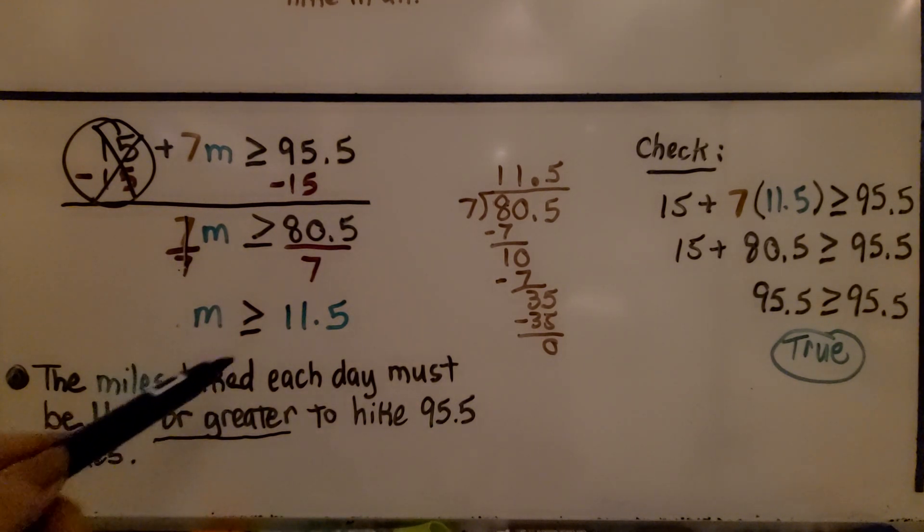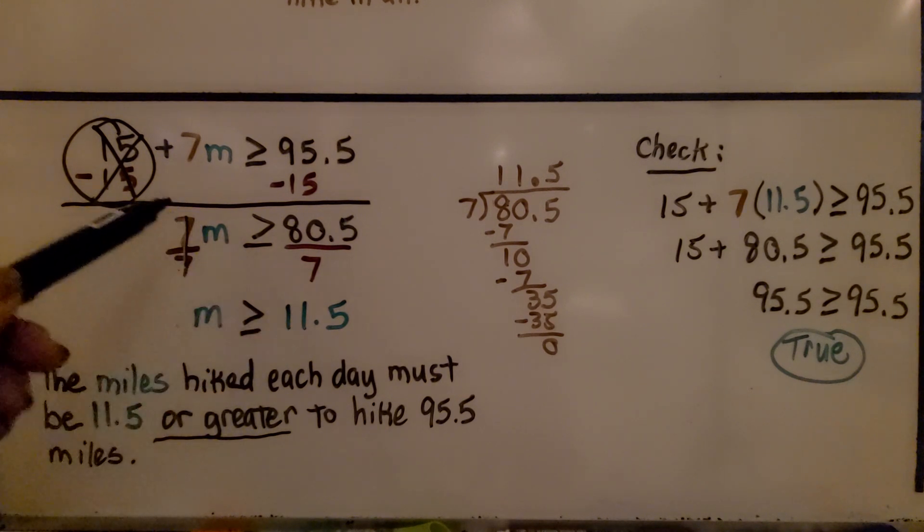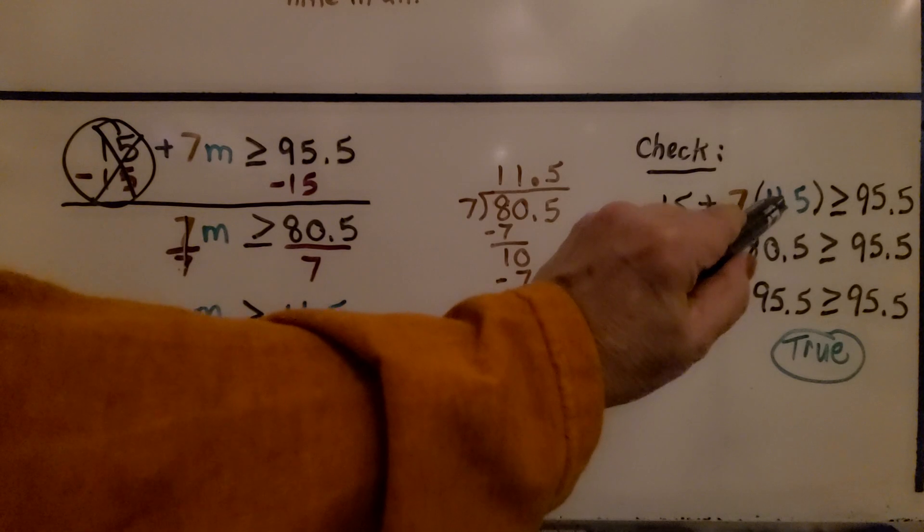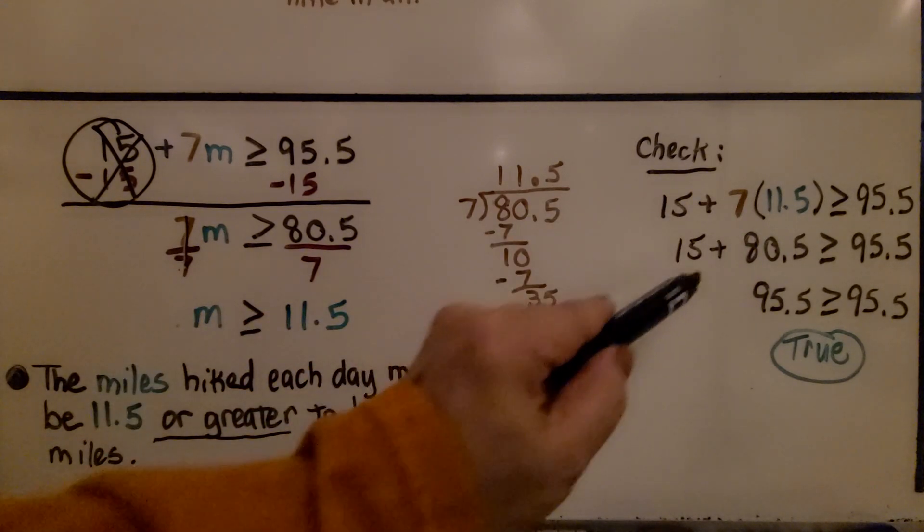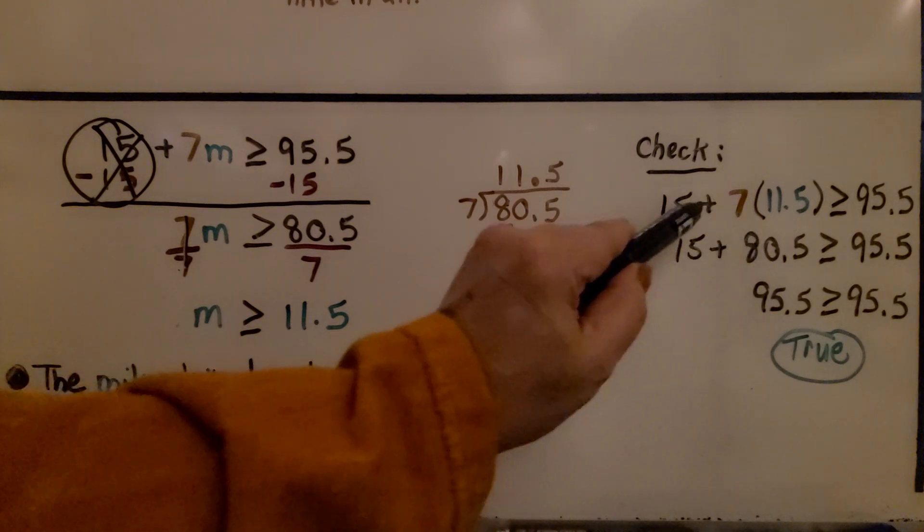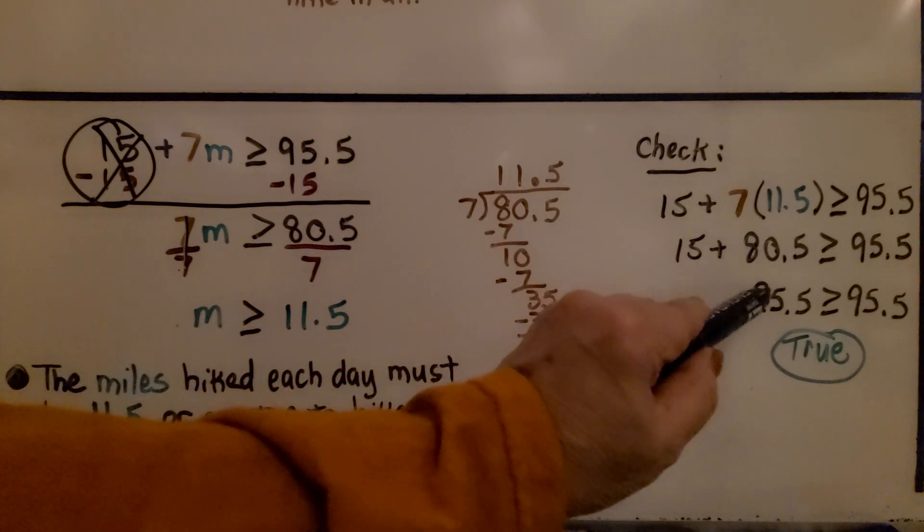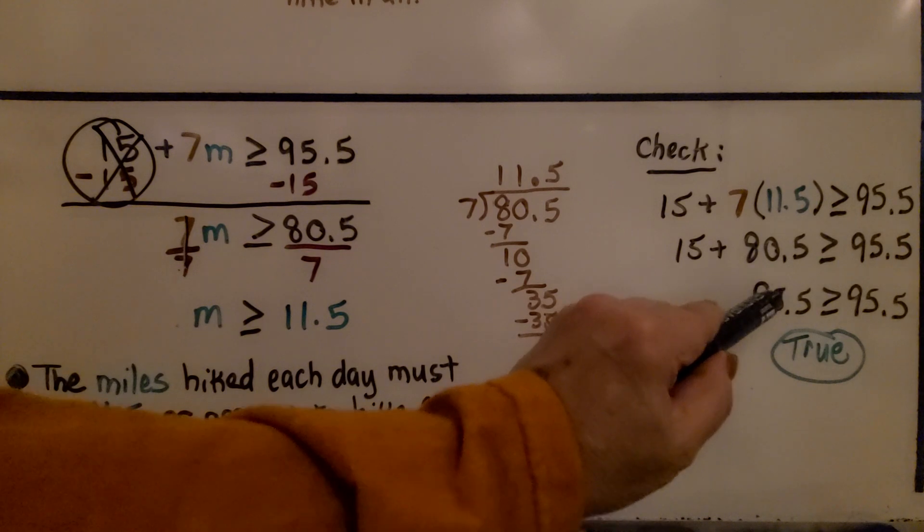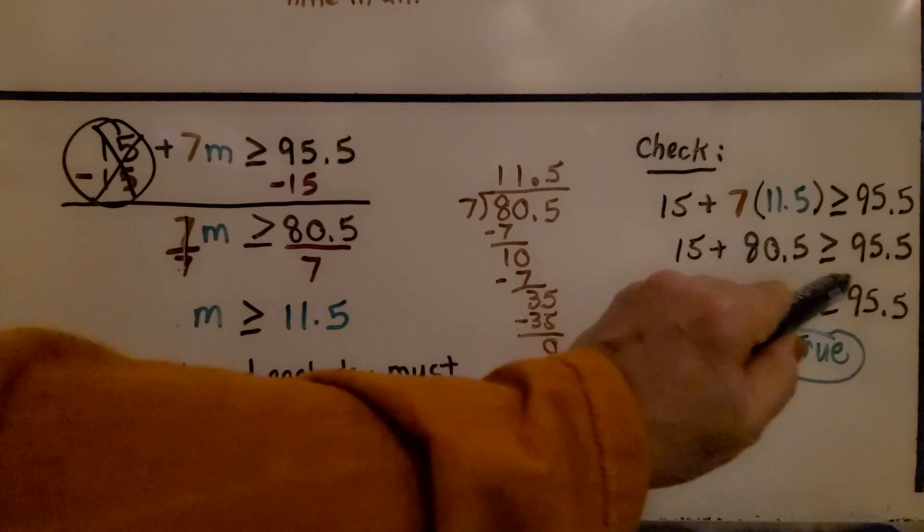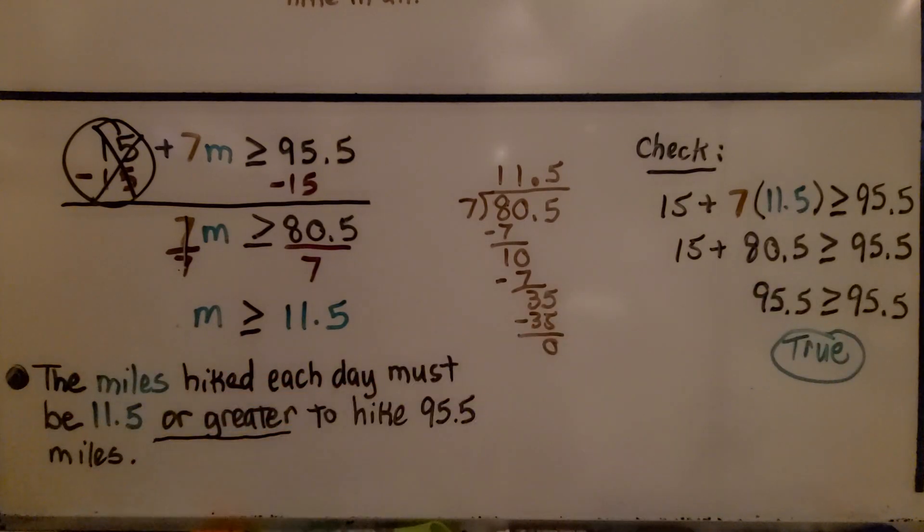Now, we can check this, we can check to see if 11 and 5 tenths makes sense. We substitute 11 and 5 tenths for M into the inequality, and seven times 11 and 5 tenths is 80 and 5 tenths. When we add the 15 to it, we get 95 and 5 tenths, and yes, it's equal to 95 and 5 tenths. It has to be greater or equal to, so that's true.